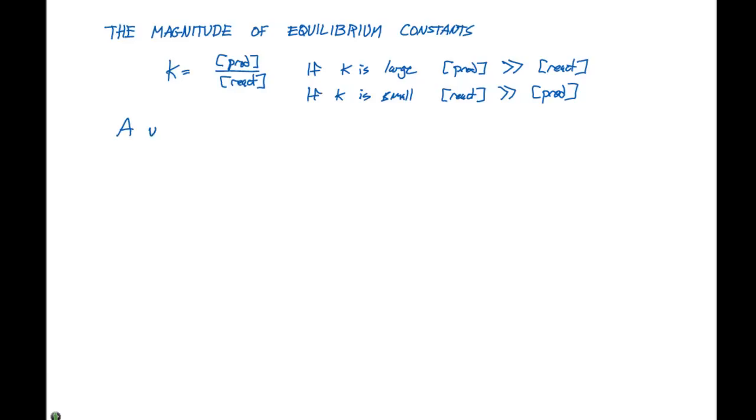If we have a very large K, that means the reaction is mostly complete. And by mostly complete, we mean we have mostly products, because at equilibrium the concentration of the products is much greater than the concentration of the reactants.